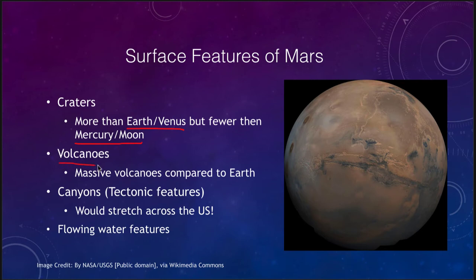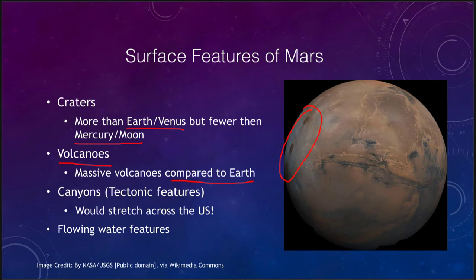We do see volcanoes on Mars — you can see several of those off to the side, there are three of them in this case, and there's another even larger one off the edge of this image. These are massive volcanoes compared to anything we have on Earth. One of the reasons for that is that Mars does not have plate activity, and therefore the volcanoes keep occurring in the same spot over and over again. So unlike the Hawaiian Islands on Earth, where the chain of islands is formed because the plate is moving, here on Mars the plate didn't move and the volcano erupted in the same place.